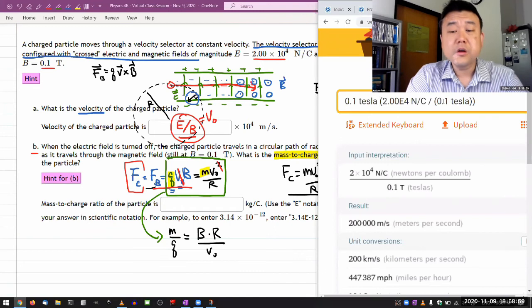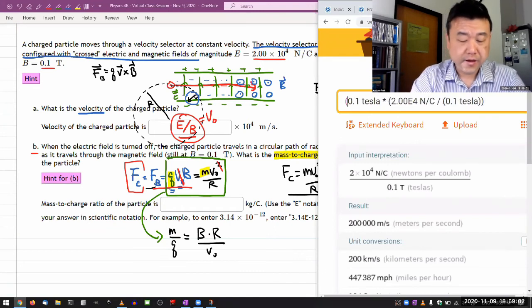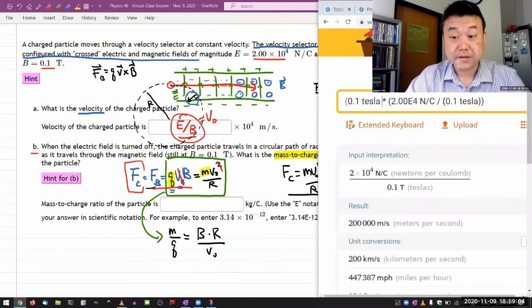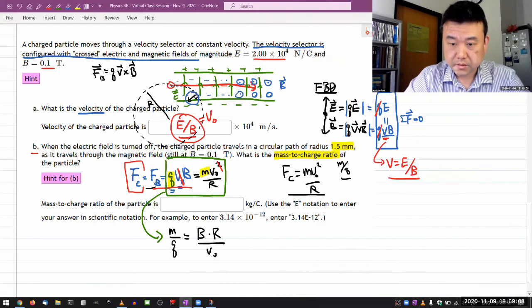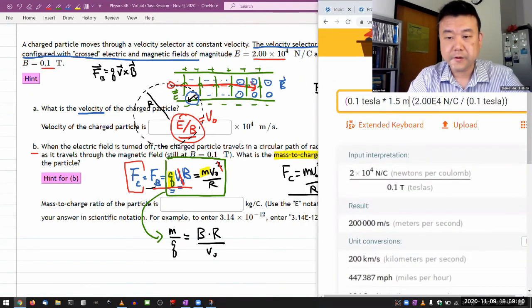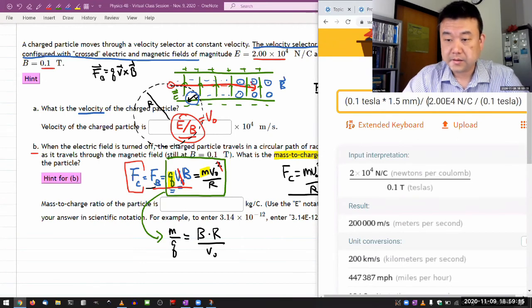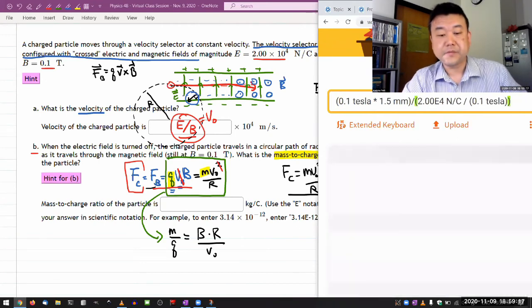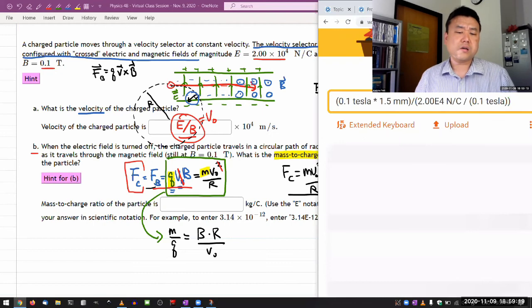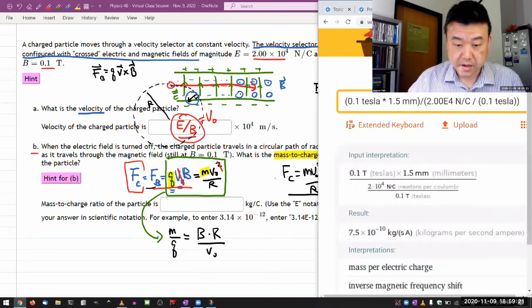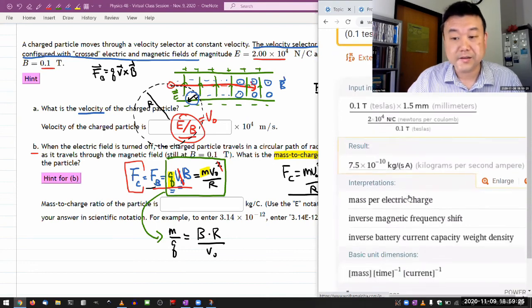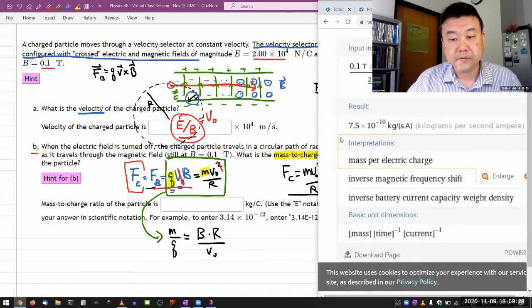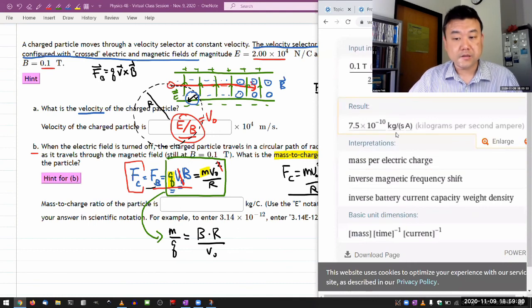My magnetic field is 0.1 tesla. And if you look at this expression carefully, the magnetic fields don't cancel, it actually becomes 0.1 tesla squared times the radius, I think that was 1.5 millimeter. I'm letting it do all from the conversion, divided by the quantity, which is V_0. And you should get kilograms per coulomb. And that's the unit there. Second time tesla period divided by coulomb.